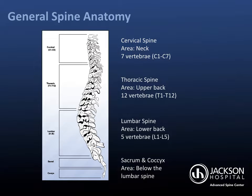The spine has five sections, made up of bones called vertebrae. Each section of the spine has its own unique function. The cervical spine supports the skull and allows for neck movement. The thoracic spine, the upper portion of the back or trunk region of the body, attaches to the ribs, which protect many vital organs, including the heart and lungs. The lumbar spine, or lower back, is the primary weight-bearing portion of the spine.